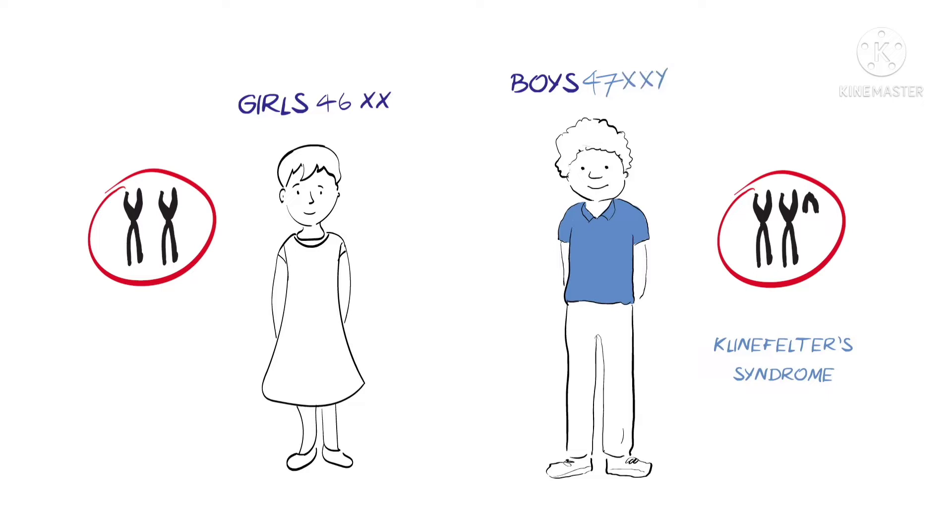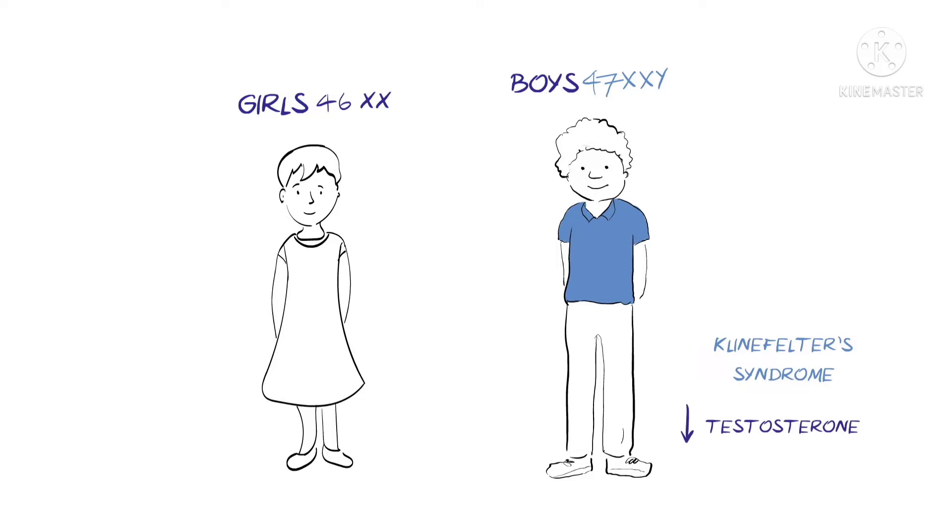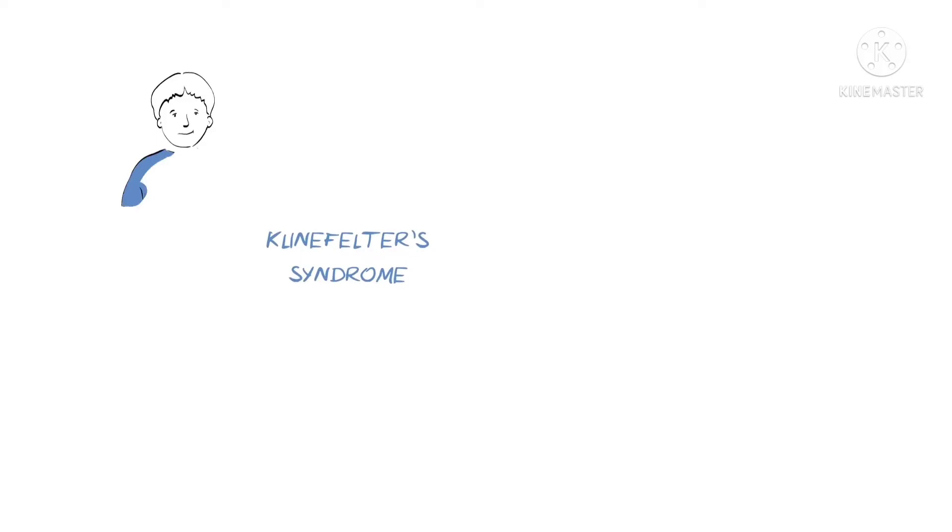The extra X chromosome means that their bodies develop slightly differently. The testes do not function properly and produce less of the hormone testosterone. The syndrome is very variable, and some boys have very few obvious symptoms. In fact, many people with Klinefelter syndrome will go through life without ever being diagnosed.